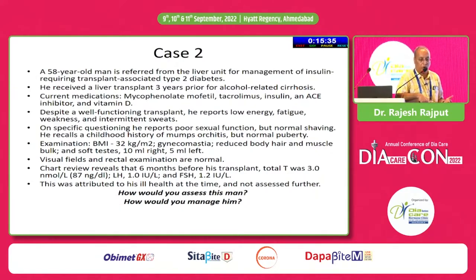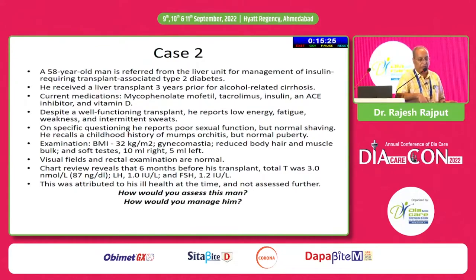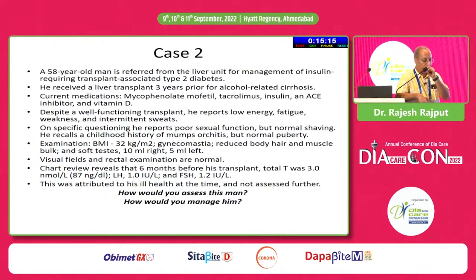He has issues regarding poor sexual function. Although his shaving is normal, on history — which we often forget to take — there is a history of childhood mumps orchitis, but he had a normal puberty. His BMI is 32. On examination, testosterone is 3.0 nanomoles or 87 nanograms per deciliter. LH is 1, FSH is 1.2. How will you assess and manage this case?